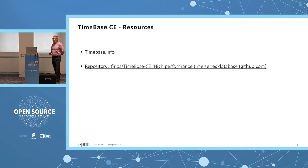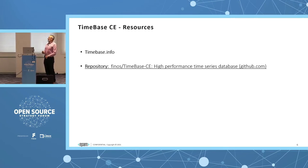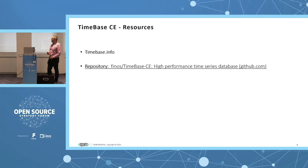In terms of resources, timebase.info is public and accessible. There's a lot of information there — some people say too much. The architecture, the file system, how it's configured, the APIs are all on there: Java, .NET, C++, and Python APIs are all documented, along with the repos for accessing the code and additional documentation via Finos.